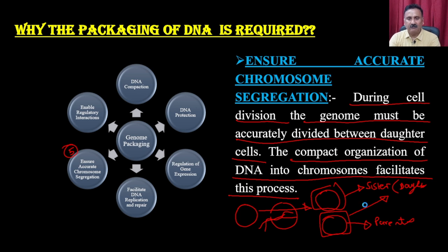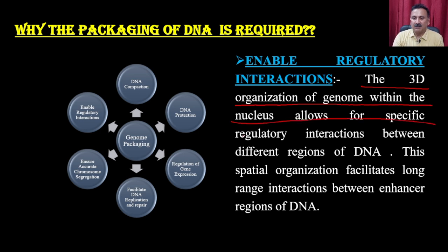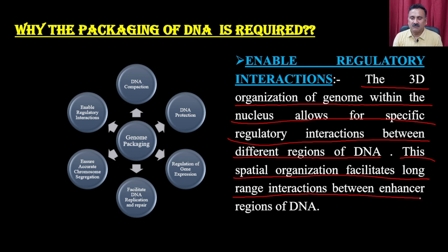The sixth reason is enabling regulatory interactions. The 3D organization of the genome within the nucleus allows for specific regulatory interactions between different regions of DNA, including long-range interactions between enhancer regions. This is all about why DNA needs to be packed into a compact structure to form chromosomes. Now let us see how this packaging occurs in different types of organisms, starting with prokaryotes.